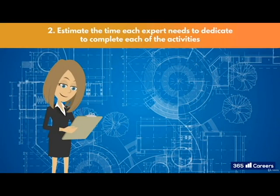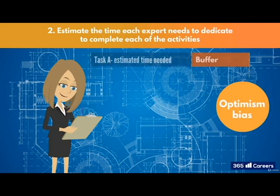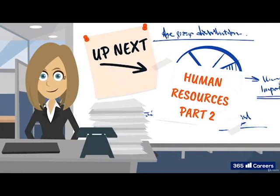The second part of the process is the estimations. You need to estimate the time each expert needs to dedicate to complete each of the activities. Don't forget your optimism bias and adding buffers — the tactics and charts we have used so far translate nicely to this area too. The next two parts we will cover in the next lessons, as they get a little more complex. After all, we are dealing with people who have varying schedules and workloads.